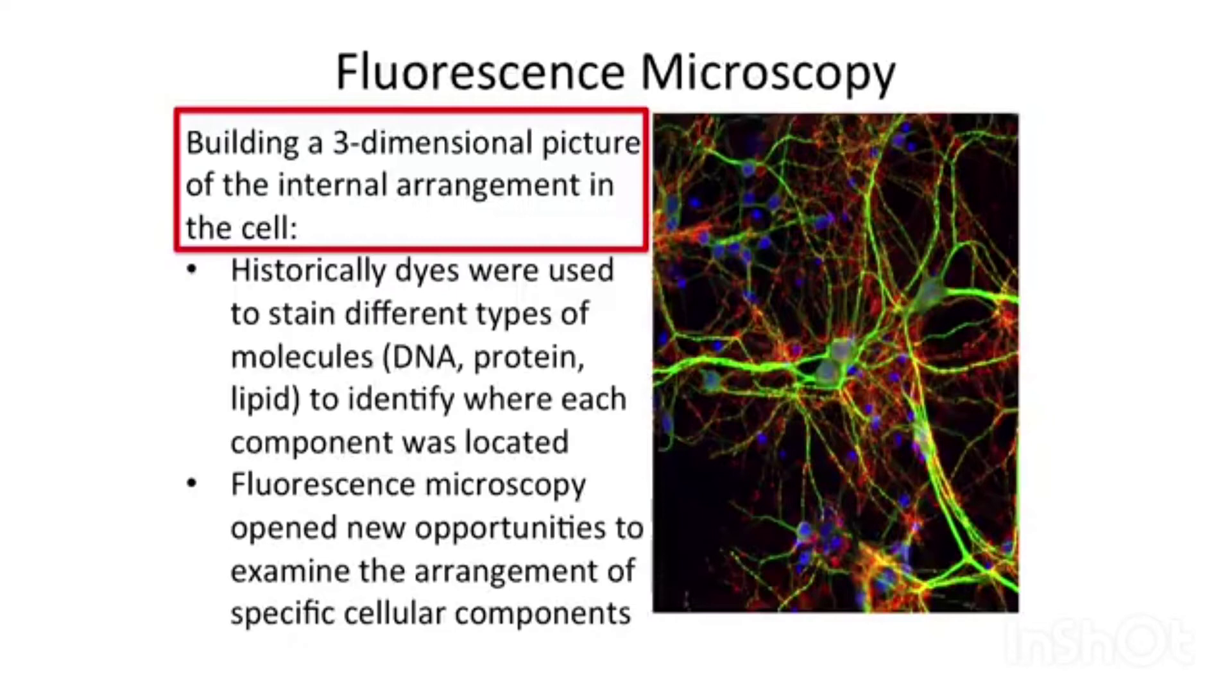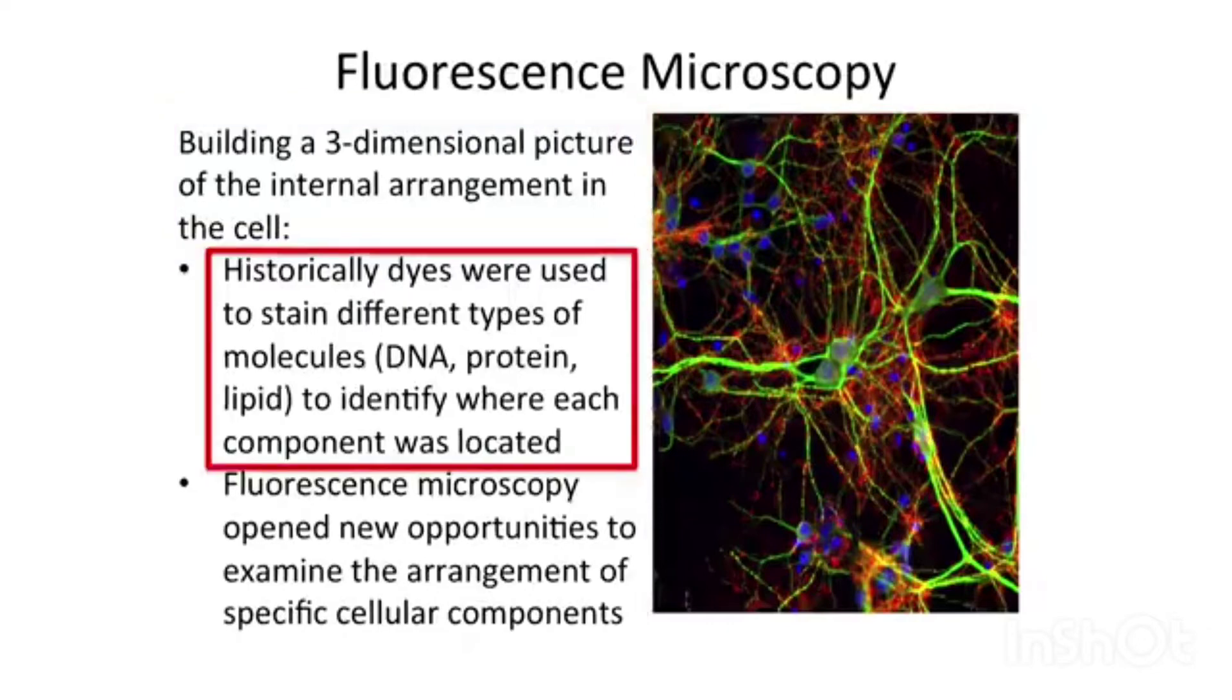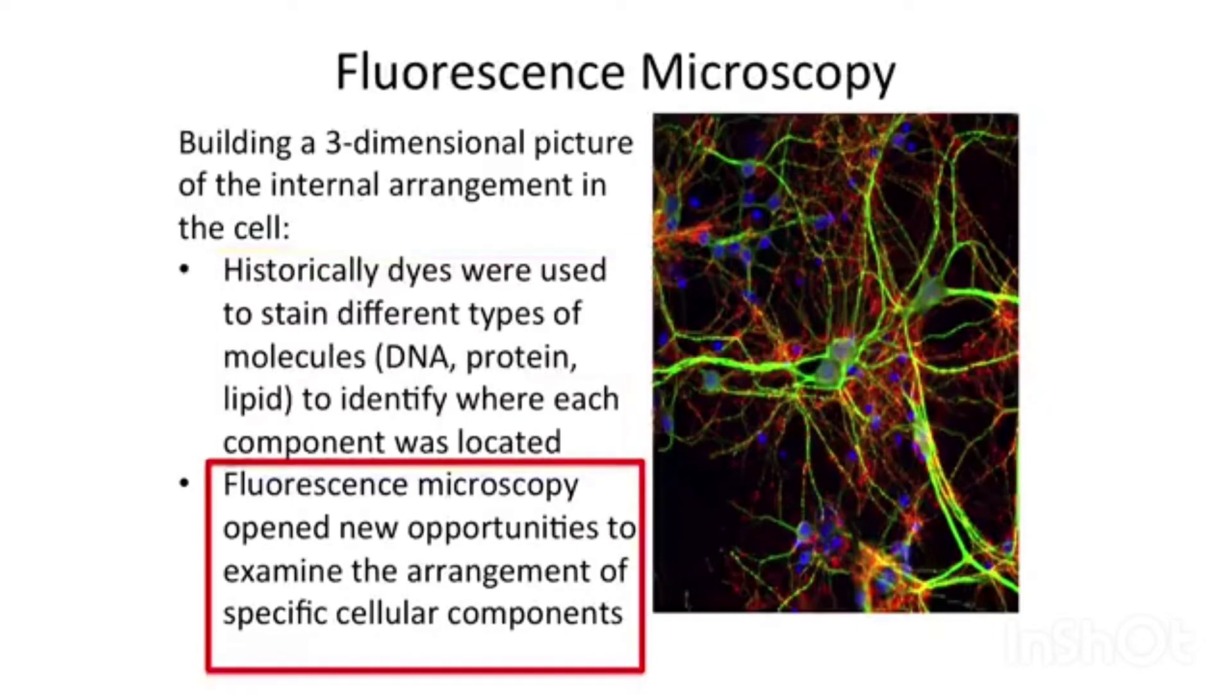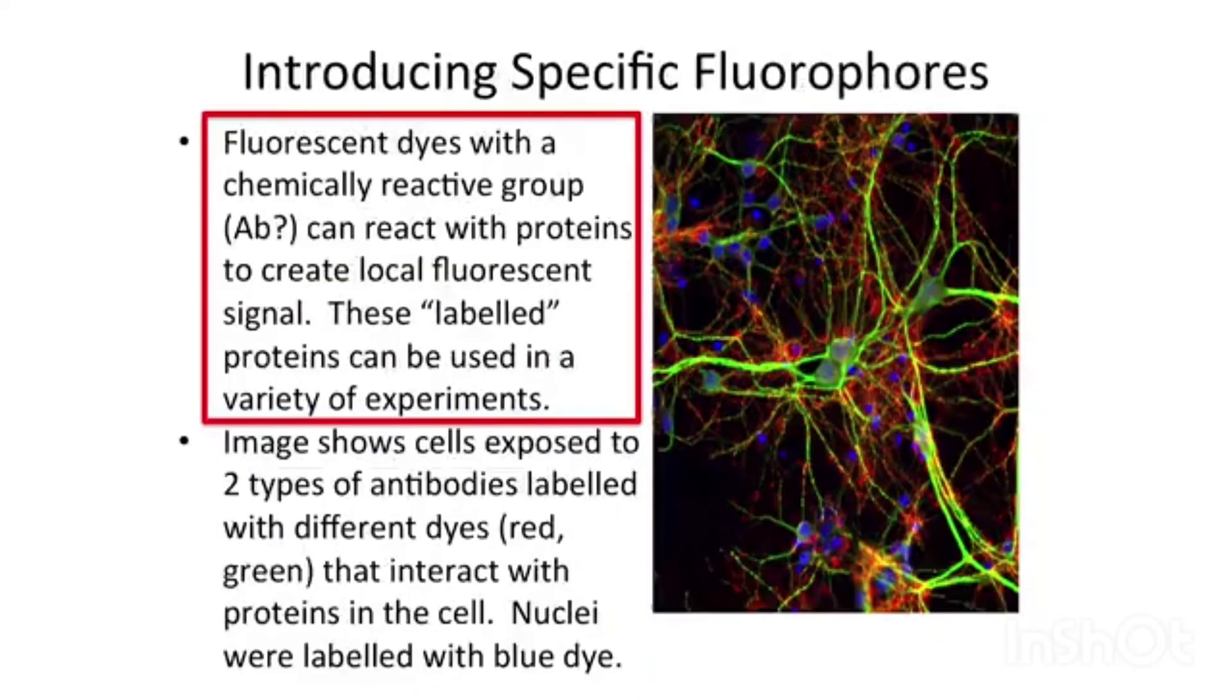Fluorescence microscopy has been used for many years. Originally, it was used to create an in-depth, three-dimensional picture of what was going on in the cell. Historically, it was dyes that were used to stain different types of molecules, DNA or protein or lipids, so that it was possible to say each component was in these different places. For example, that's how it was discovered that DNA was in the nucleus.